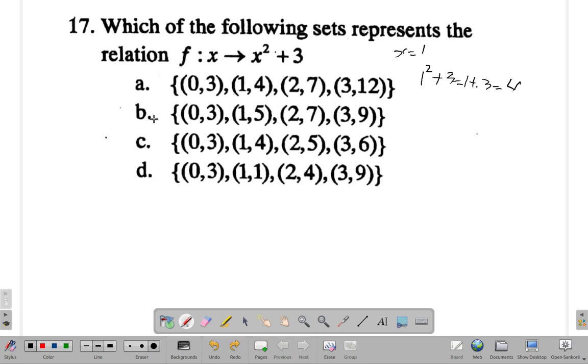B has a (1,5), you can count b out. So far d has a (1,1). When you put 1 as x, 1 squared plus 3 is 4, not 1, so this (1,1) doesn't work out. D can be counted out. You have contention between a and c now.